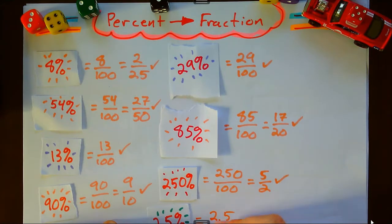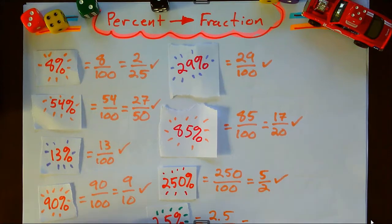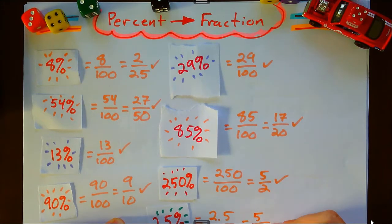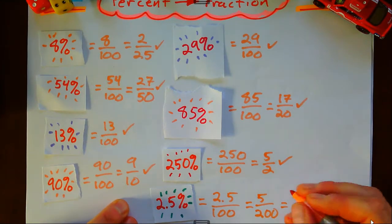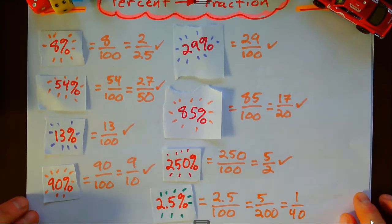2.5 out of... oops, off the screen there, sorry about that. 2.5 out of 100 - let's move that up - is 5 out of 200. I just doubled both top and bottom and I got 1 over 40. 4.3%, what's that going to give me?